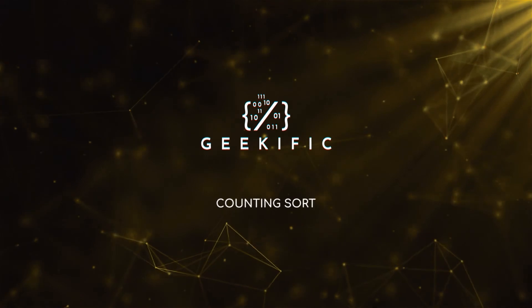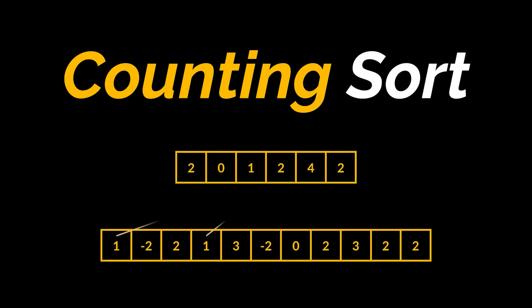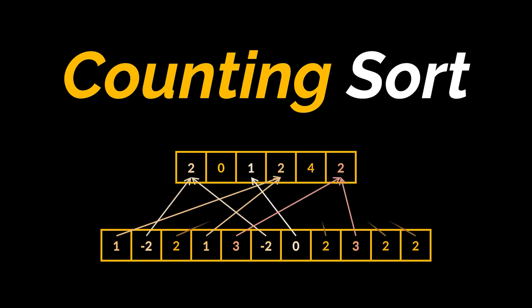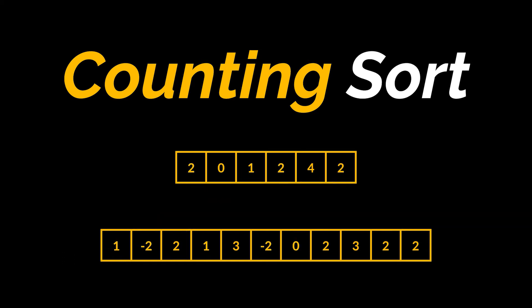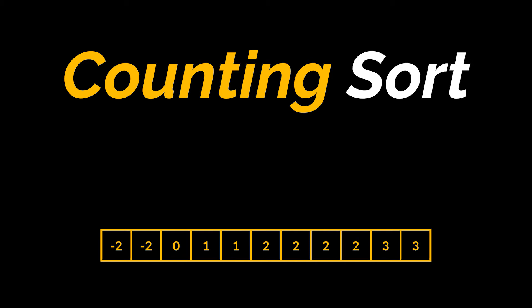What's up geeks and welcome to the channel. So far we've been enriching the sorting algorithm series with algorithms that are able to sort any type of object, but what if we needed to sort only integers — and in particular small integers? Are these algorithms still the best choice, or do we have more performant algorithms we can rely on? Well, one of these specialized algorithms is called counting sort, and that's the topic of today's video.